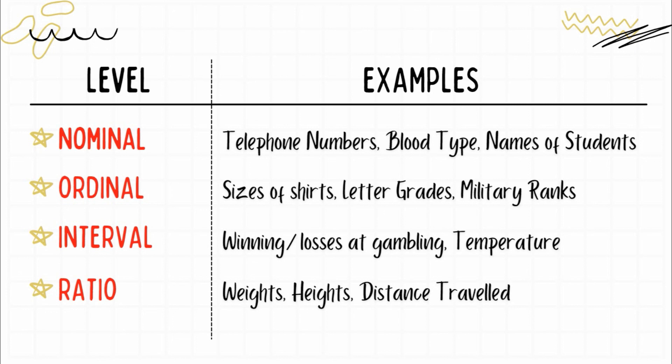For ratio, examples are weights, heights, distance traveled, and speed of a car. In ratio, when we say zero, it is truly zero — nothing at all. If your weight is zero, you have no weight. If your height is zero, you have no height yet. If the distance traveled by a car is zero, it did not move. Unlike in interval where zero still has a value, in ratio, zero really means nothing.